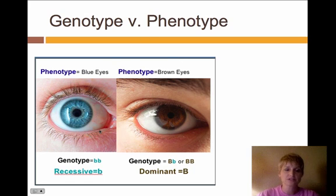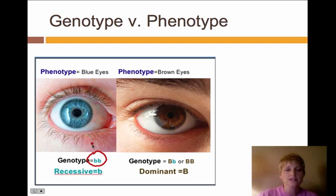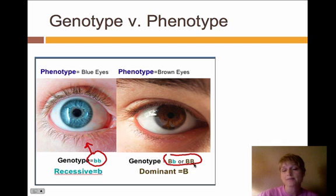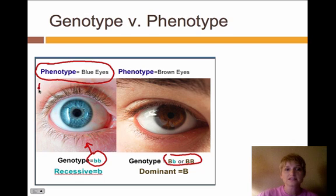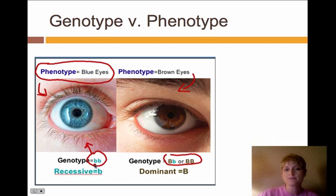Now let's talk about genotype and phenotype. The genotype is just the letter combinations. The genotype for blue eyes is going to be lowercase b, lowercase b, and that indicates blue eyes. The genotype for brown eyes could be capital B, lowercase b, or it could be capital B, capital B. Phenotype is what actually shows up in the individual. So this individual has blue eyes, this individual has brown eyes. Genotype and phenotype tell us related things — the phenotype is blue eyes, and the genotype lowercase b, lowercase b tells us that the phenotype is going to be blue eyes.